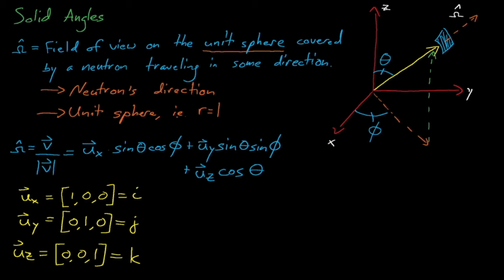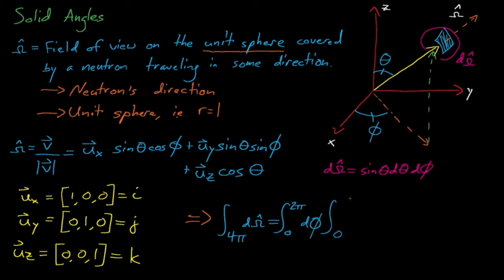Note that phi ranges from 0 to 2 pi, and that theta ranges from 0 to pi. If we have some arbitrary non-unit vector v, then we can find its unit vector by normalizing v — by dividing v by the magnitude of v. The term d-omega, which is the differential amount of area on the unit sphere surrounding the solid angle vector, is equal to the sine of theta times d-theta times d-phi. This term will be important later on, as we'll need to integrate different expressions over ranges of solid angles. If we integrate d-omega over all solid angles — phi from 0 to 2 pi and theta from 0 to pi — we find that this integral equals 4 pi. This makes sense, since the area of a sphere is 4 pi r squared, and the radius of our unit sphere is 1.